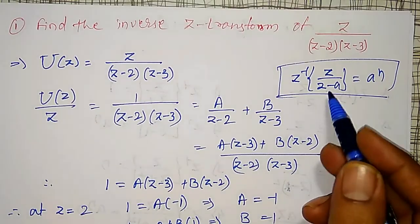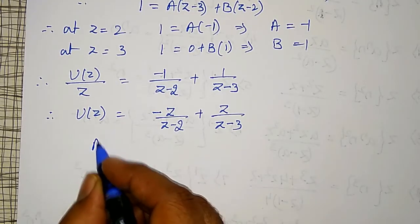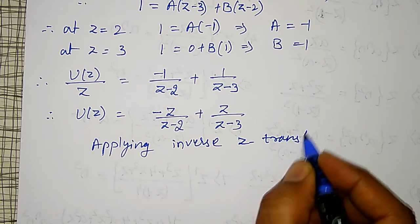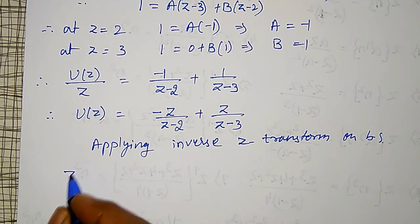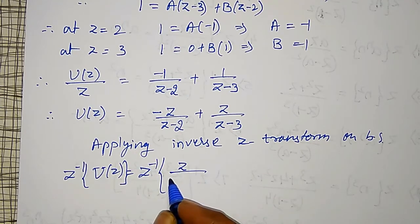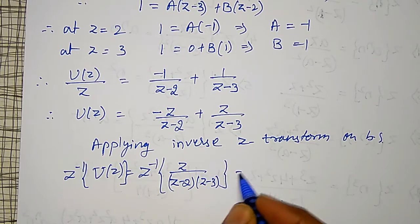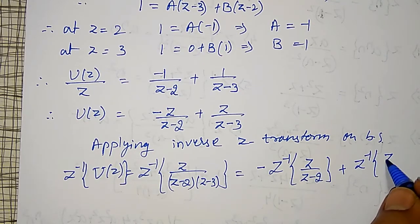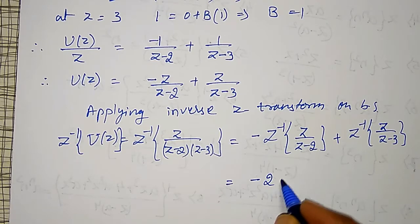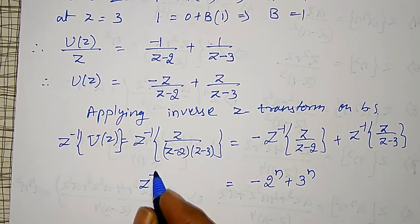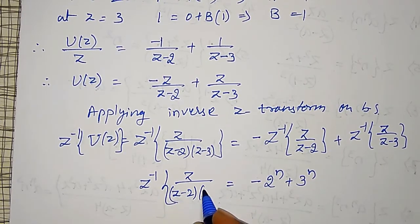Using the standard formula, we need z divided by z minus a. Now applying inverse z-transform on both sides: inverse z-transform of U of z equals minus inverse z-transform of z divided by z minus 2, plus inverse z-transform of z divided by z minus 3. Using the formula, this gives minus 2 to the power n plus 3 to the power n, which is the inverse z-transform of z divided by z minus 2 into z minus 3.